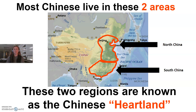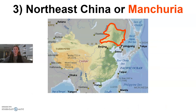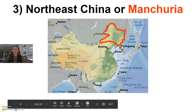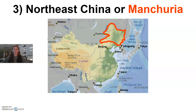Even though North China and South China are separate regions, they are somewhat connected — just like how the Ozarks encompasses multiple states even though there are different state borders. In the same way, even though North China and South China are separate regions, they are connected by this geographic area called the heartland, where the majority of the population lives. I'm going to stop this video right here, and we will pick back up on part two of your 15-1 notes in the next video. See you there.